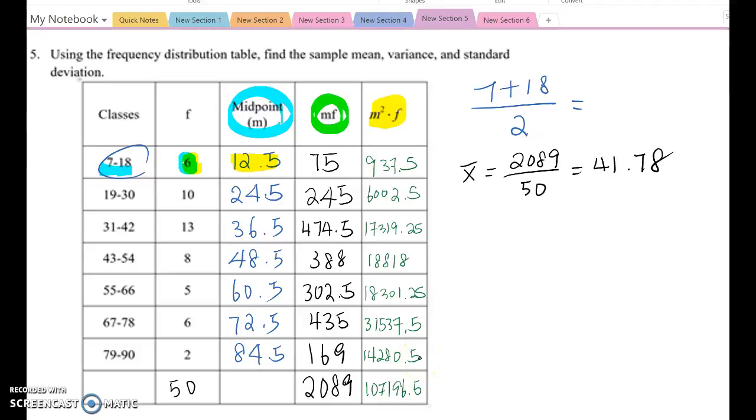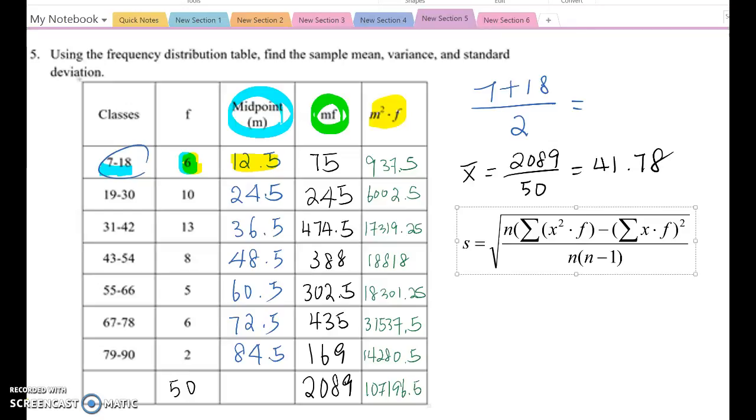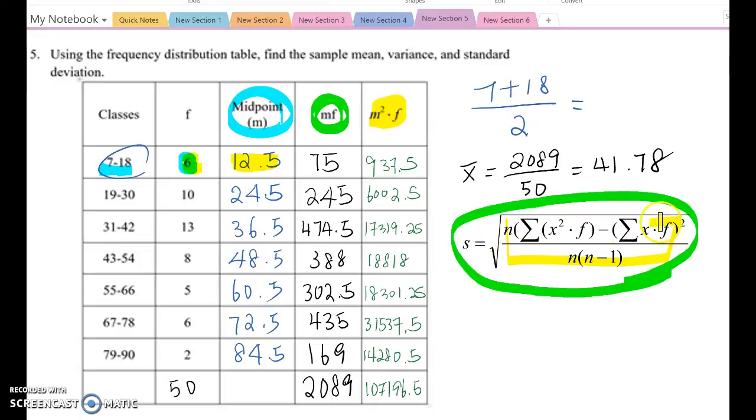We are almost ready to find the variance and the standard deviation. If you go back to your booklet, you will get this formula. Hence, S equal to square root N times sum of X squared times F minus sum of X times F square over N times N minus 1. This whole formula is the standard deviation. Then, this inside value will be your variance here.